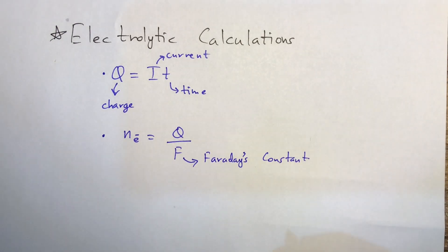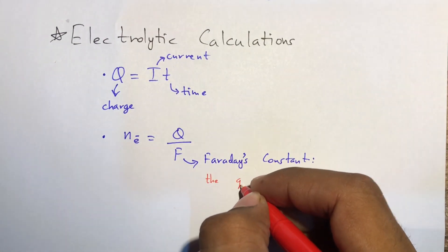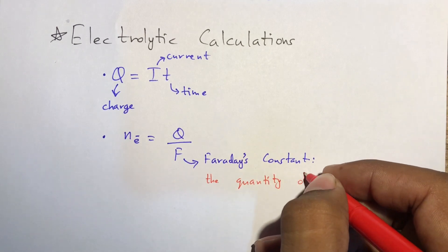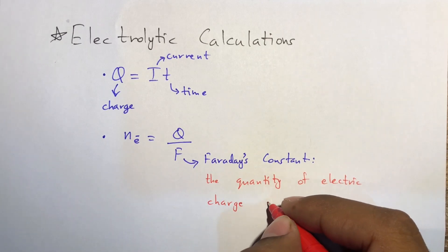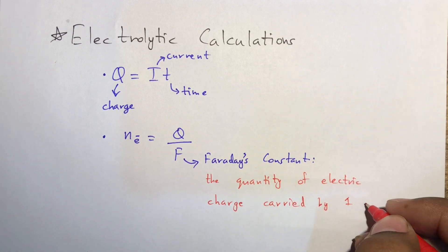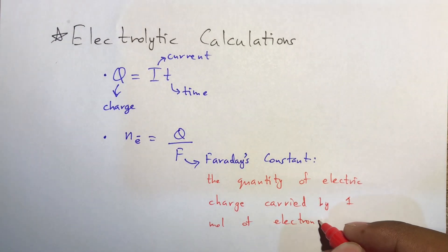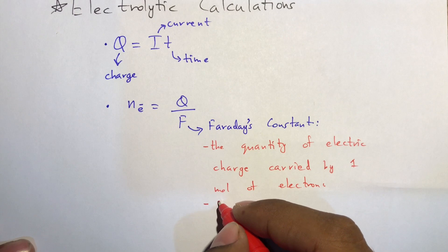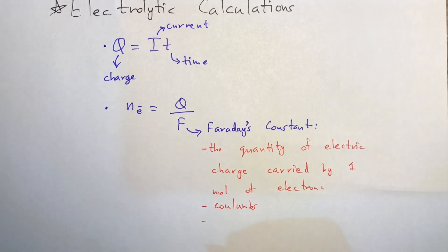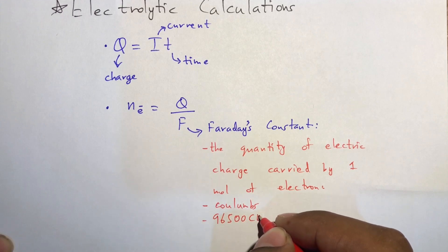What is F? F is Faraday's constant. Faraday's constant is basically the quantity of electric charge carried by one mole of electrons. It is measured in coulombs and its value is 96,500 coulombs.